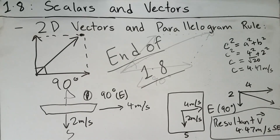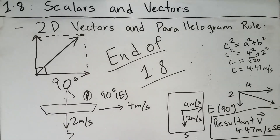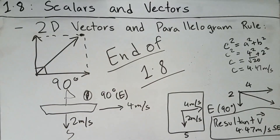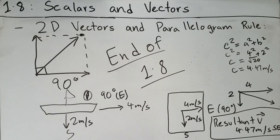This is it for section 1.8. I hope you were able to learn about scalar and vector quantities and how to find resultant vectors — whether using a right triangle approach or the parallelogram rule. Leave a comment with feedback so I can improve my videos. I'll see you in the next video. Thanks for watching.